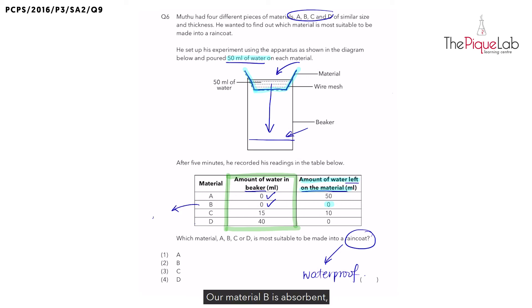Okay, so material B is absorbent as it absorbs all the 50ml of water. However, if you look at material A, it had 50ml of water left on top of the material, which means it did not allow water to seep through. It did not allow water to be absorbed as well. Therefore, material A is waterproof.